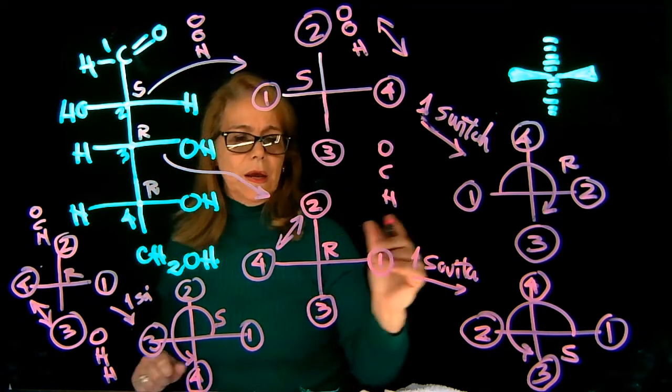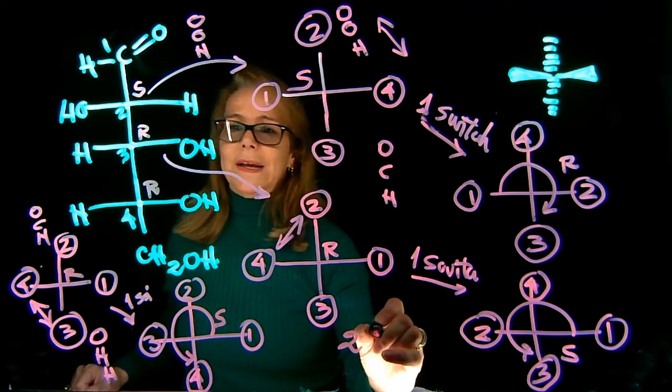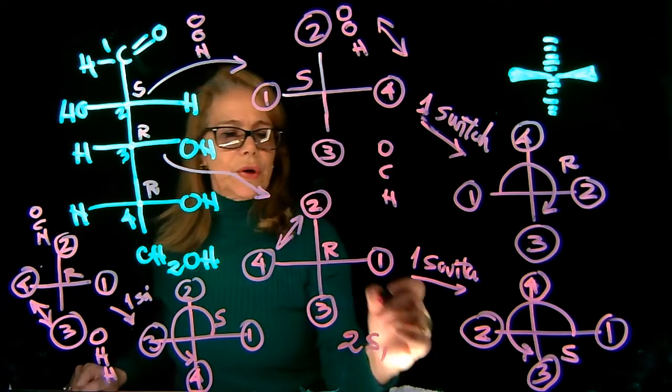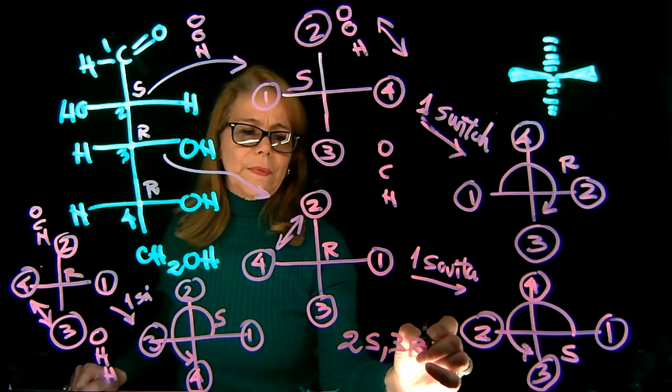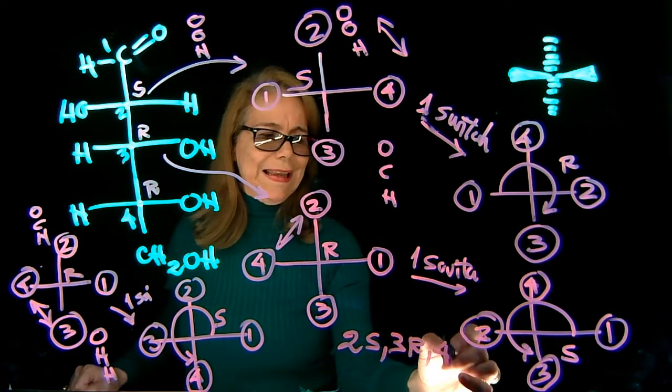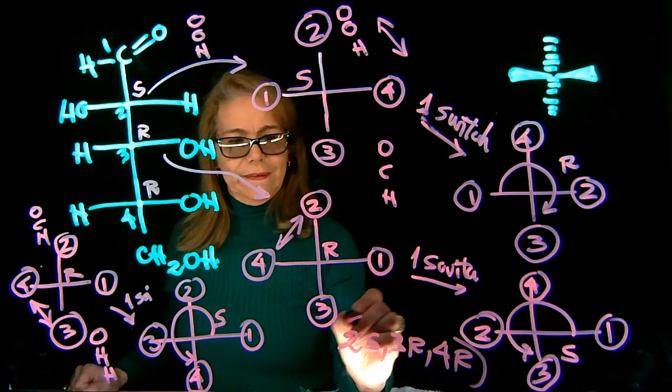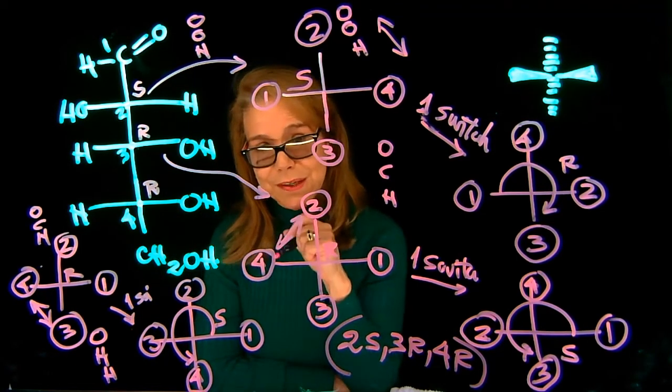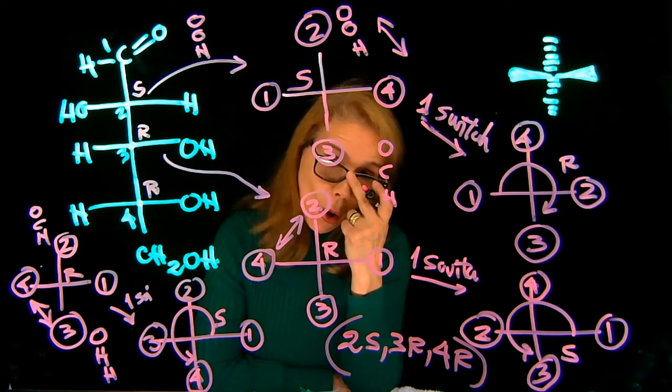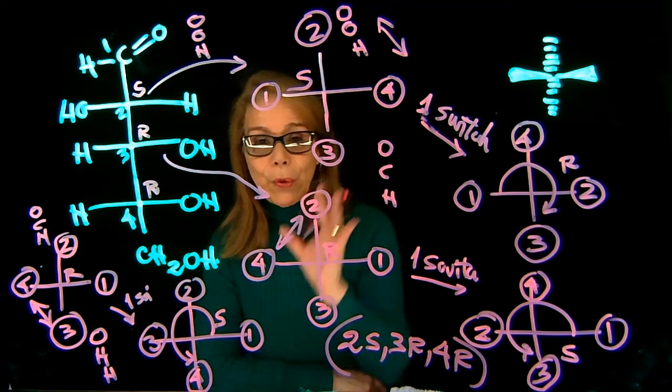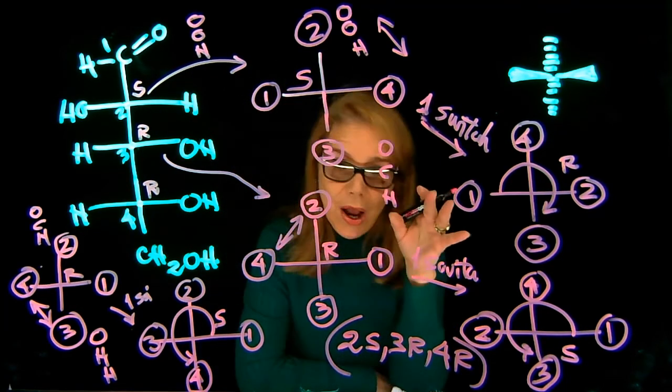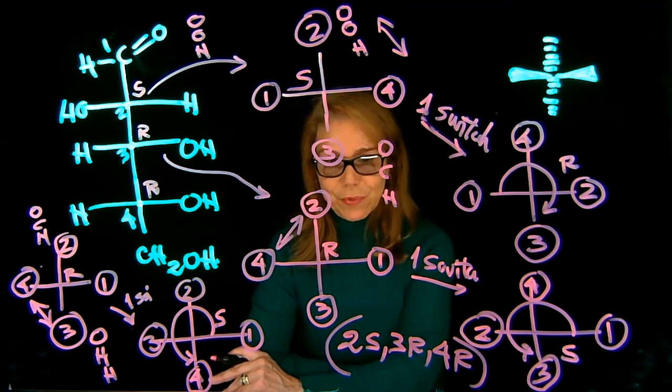So we're going to say this is 2S, carbon 3 is R, carbon 4 is R. That would be the answer you would be picking if this was a multiple choice. That can be one format of question, but the point is that we know how to do absolute configurations in Fischer projections.